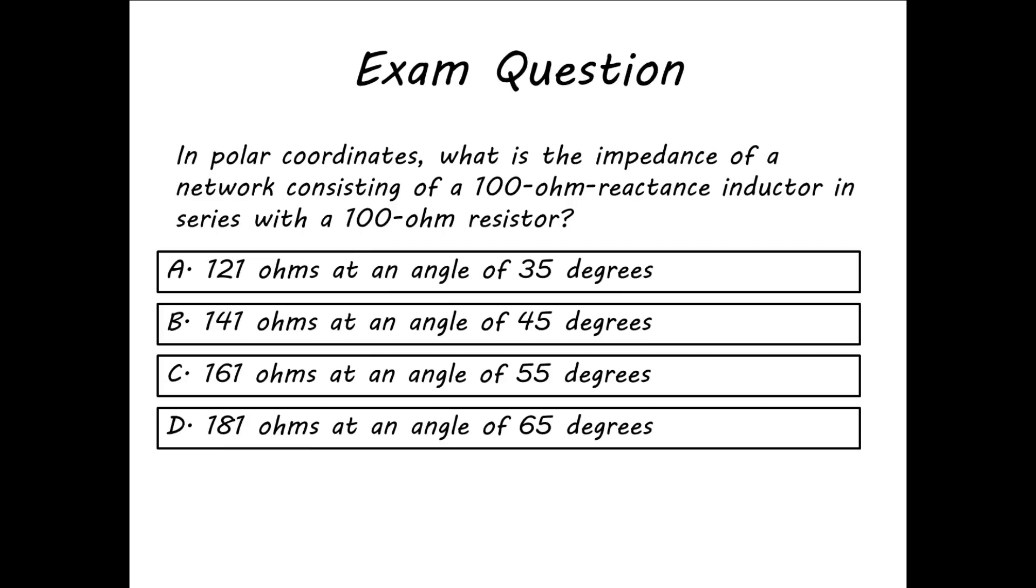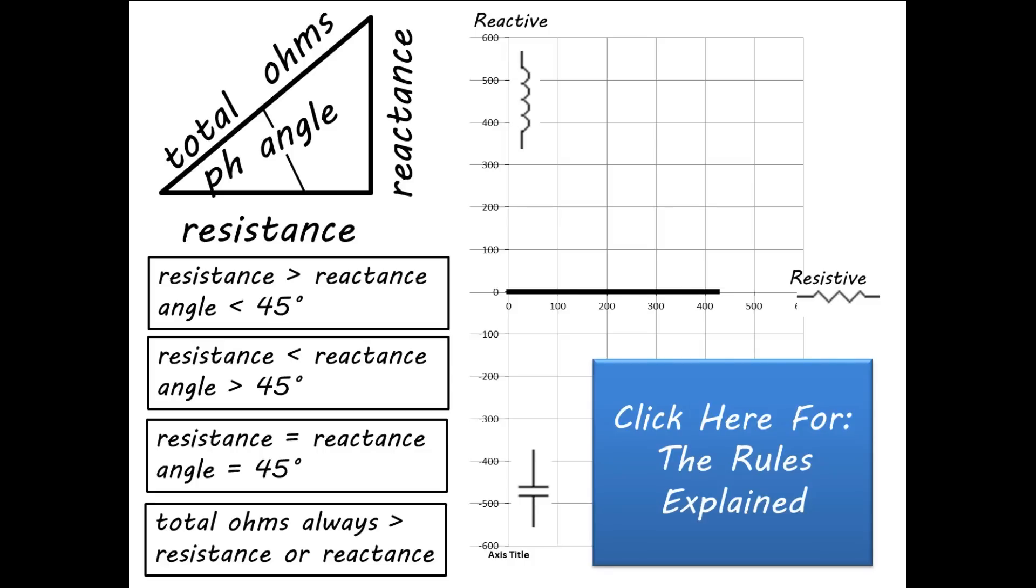Here's the example. In polar coordinates, what is the impedance of a network consisting of a 100 ohm reactance inductor in series with a 100 ohm resistor? First, you'll graph your point, and then label it on the triangle.